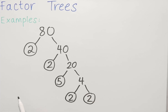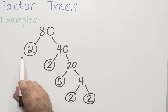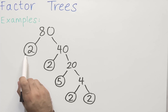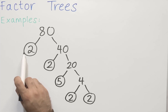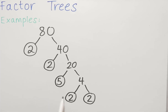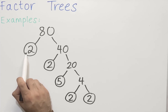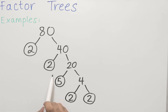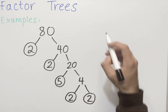Both of these are prime numbers, so we can circle them. Now, to write 80 as a product of its prime factors, all we need to do is look at the numbers we've circled — all the prime numbers within this factor tree. The prime numbers within this factor tree, the numbers we circled, were 2, 2, 5, 2, and 2.